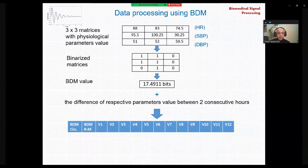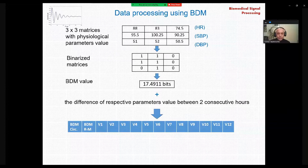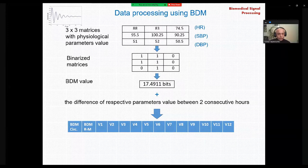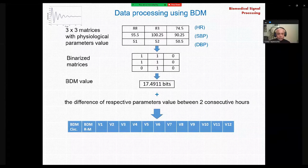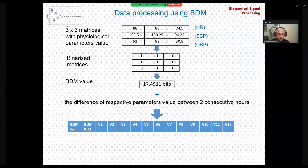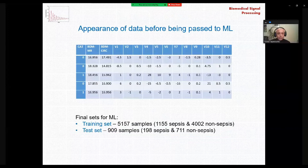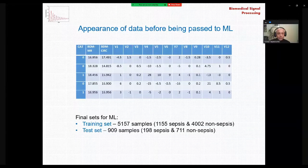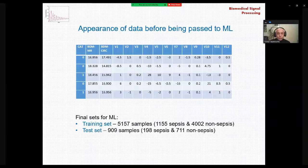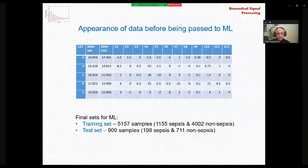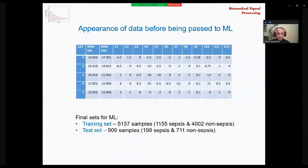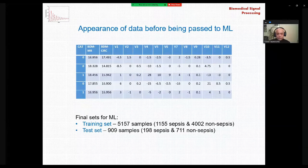Finally, to the vectors that will be provided to the machine learning algorithm. As you can see, we have here a 14-element vector with two cells for the complexity, and V1 to V12 for the difference of the six parameters, and all this looks in the final format like on the screen, where we have an additional column for labeling the samples, 0 for non-sepsis samples and 1 for sepsis samples. And our final set used for machine learning consists of the training set with 5,157 samples, as well as the test set with 909 samples.